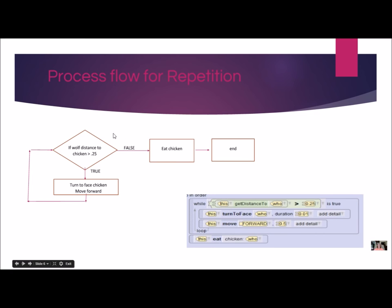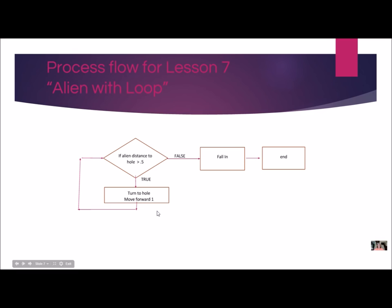Today we're going to learn how to take a process flow and make it into code. Let's take a look at the process flow for our actual lesson today: alien with loop. We're going back to the program from chapter 4 where the alien falls into a hole. The condition is: if the alien's distance to the hole is greater than 0.5, it's true — I turn to face the hole and move forward. I keep this loop going as long as the distance is greater than 0.5. When he's close enough, I end the loop, he falls in, and the program ends.